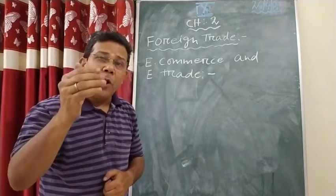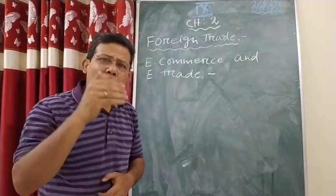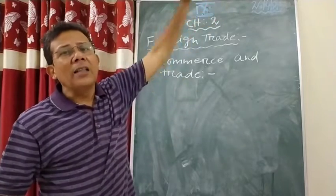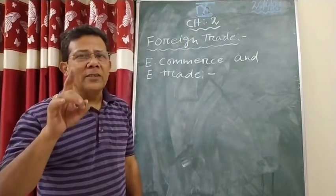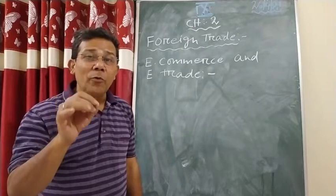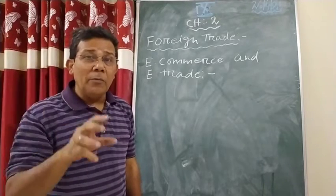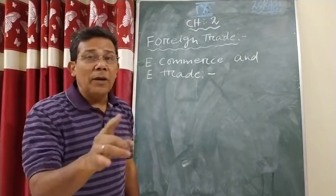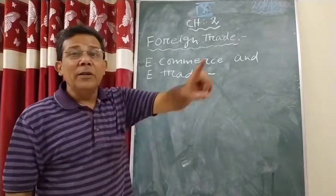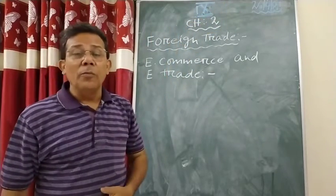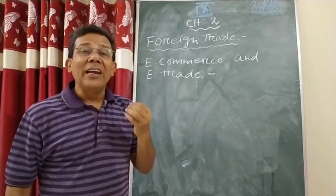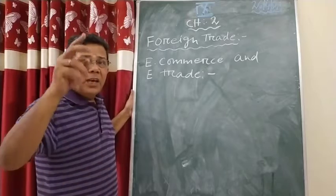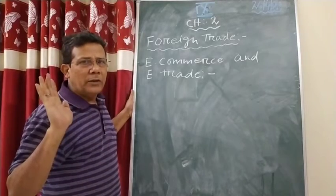So when you are buying some product from a particular country and the country who is buying it is not using it in their own country but is selling it to some other foreign country, those types of trades are called entrepot trade. For example, India bought goods from USA, but those goods were not used by India and were sold to Bangladesh. Those are called entrepot trades. So foreign trade is divided into three categories: import, export, and entrepot.